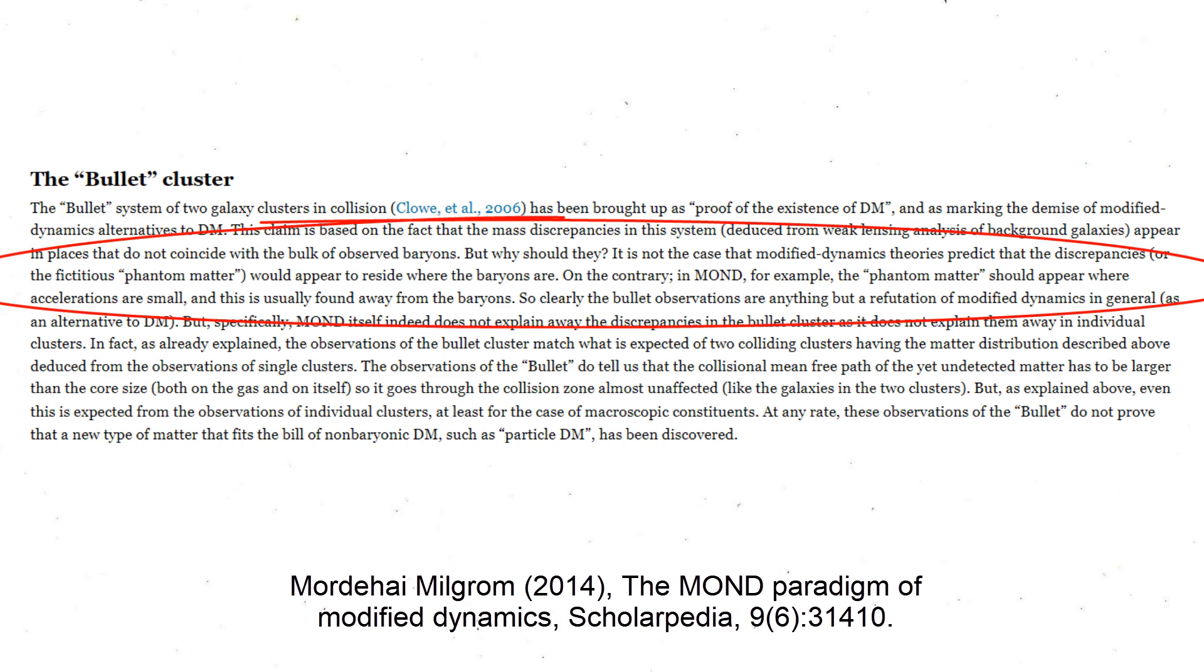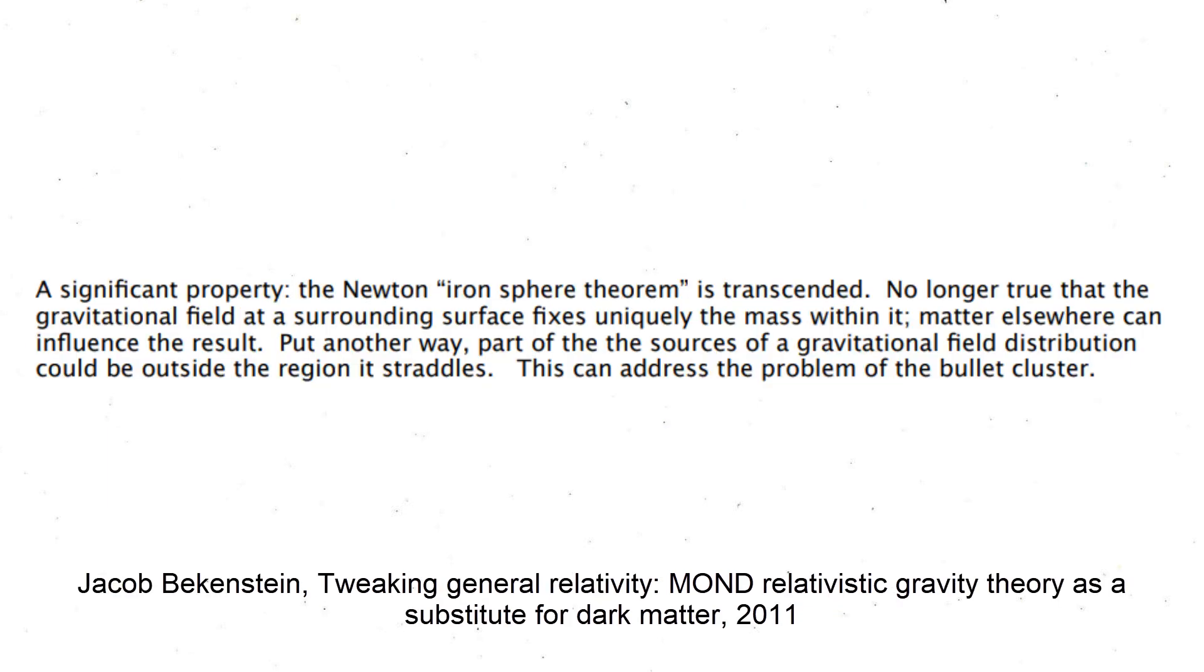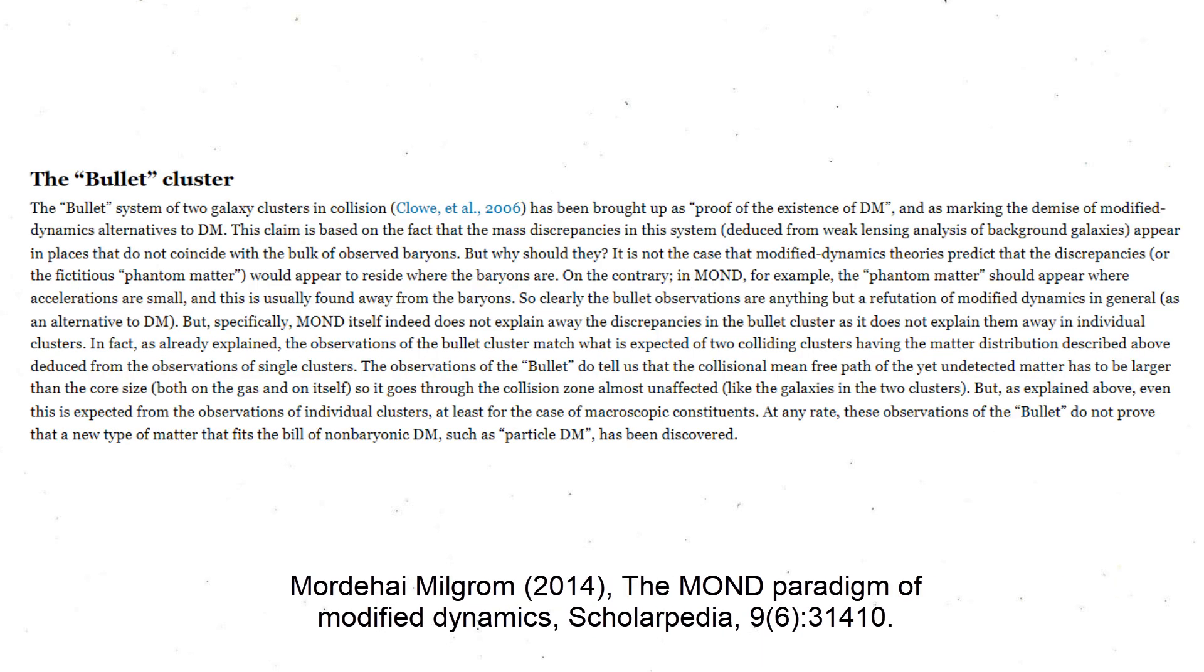Bekenstein's scale-dependent critical acceleration violates Newton's shell theorem. The gravitational field at the surrounding surface does not fix uniquely the mass within it, but matter elsewhere can influence the result, which could solve the bullet cluster dynamics. In this cluster, the problem is that there is gravitational field whose sources do not seem to be inside, but outside.